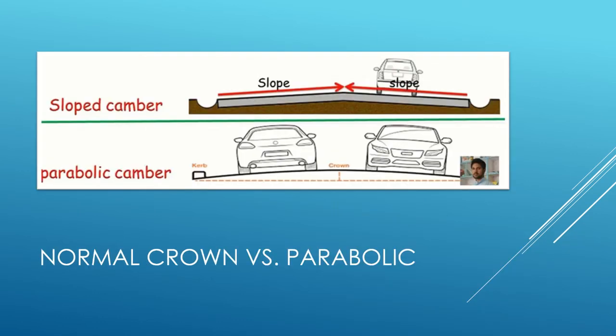Let's talk about slope camber — the difference between a normal crown versus a parabolic crown. This graphic shows the difference between the two shapes.